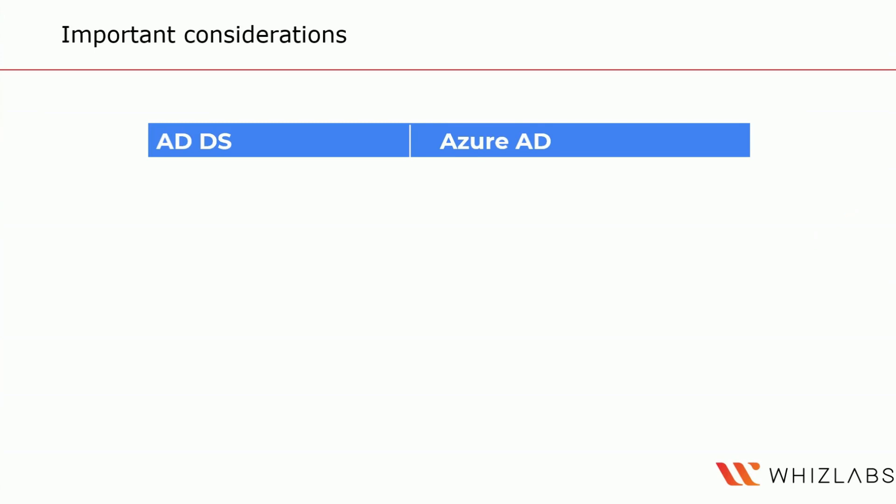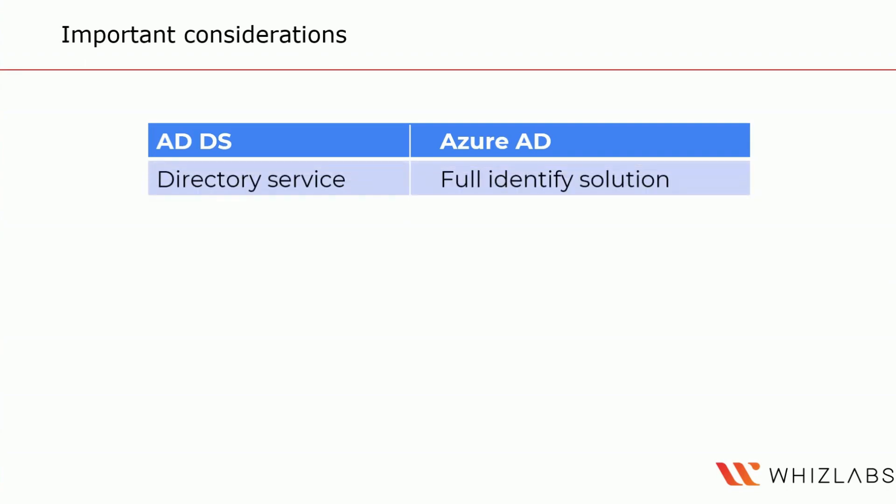Let's take a look at some important considerations when comparing Active Directory Domain Services versus Azure Active Directory. At its core, Active Directory Domain Services is purely an identity solution that provides methods for storing directory data and making this data available to network users and administrators. Azure AD is a full identity solution for internet-based applications that offers the ability to utilize either HTTP or HTTPS communication. You can also invite external users who have Azure AD or even a Microsoft account to automatically sign in without further configuration.